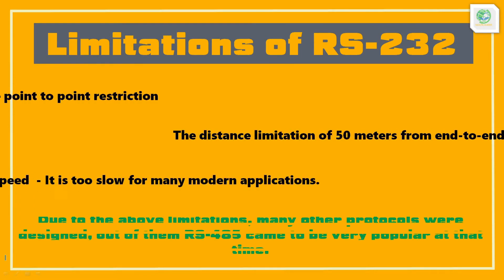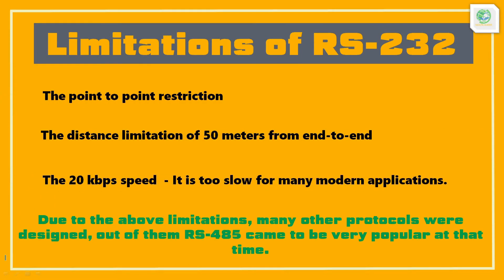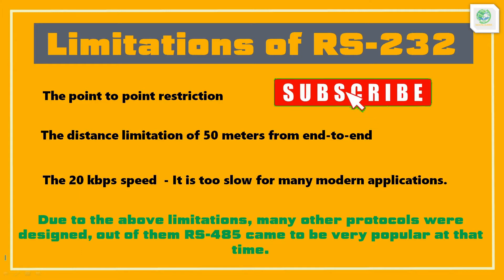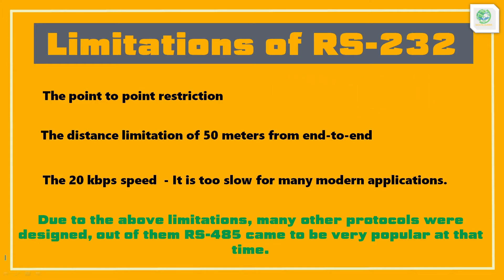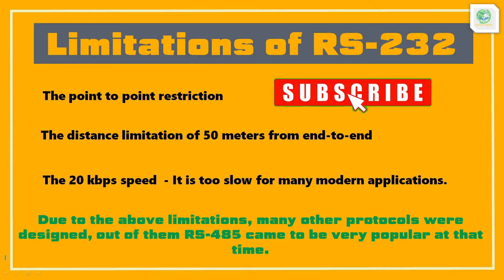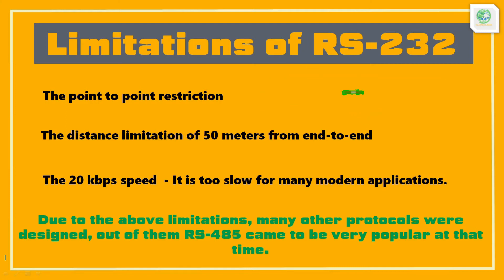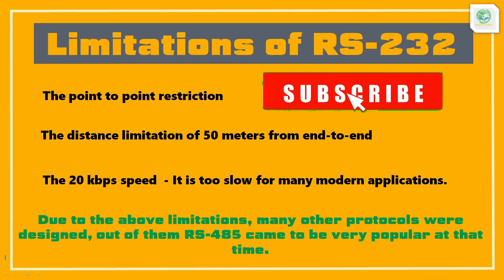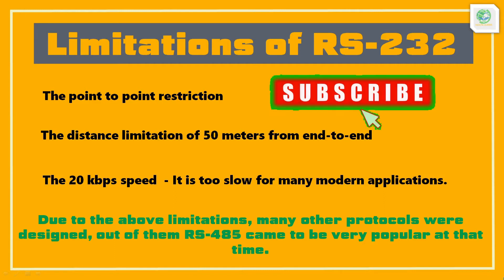In our last video on RS-232, we studied that RS-232, a serial communication protocol, was designed in the year 1969. But it had many limitations: it can communicate between two points only, multiple devices could not be grouped on one network using RS-232, distance was limited to 50 meters, and speed was limited to 20 kbps.